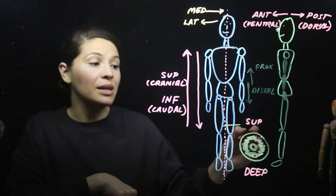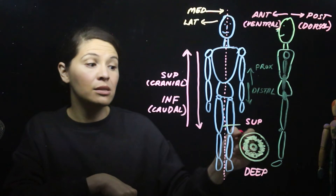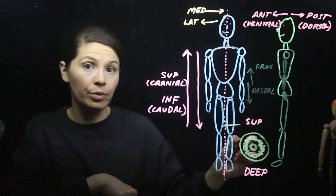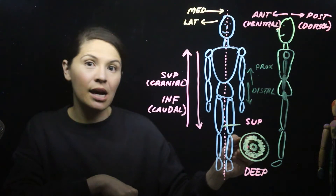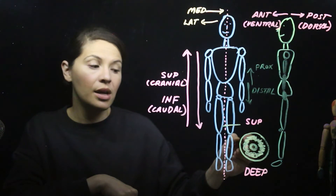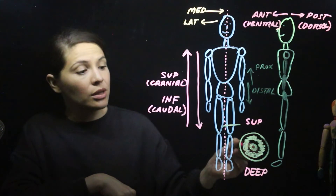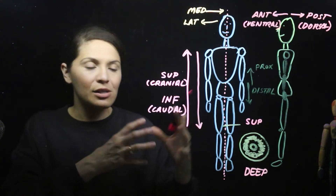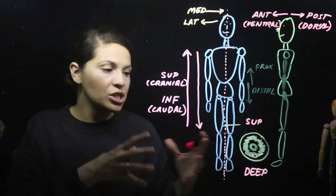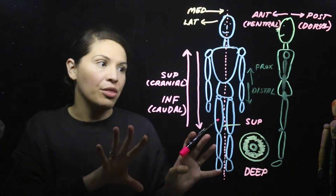For example, the skin is superficial to the muscle and also superficial to the bone. The muscle is also superficial to the bone, because it's closer to the outside than the bone. Using deep: the bone is deep to the muscle and also deep to the skin, and the muscle is deep to the skin. There are lots of different combinations, and lots of examples throughout the body.